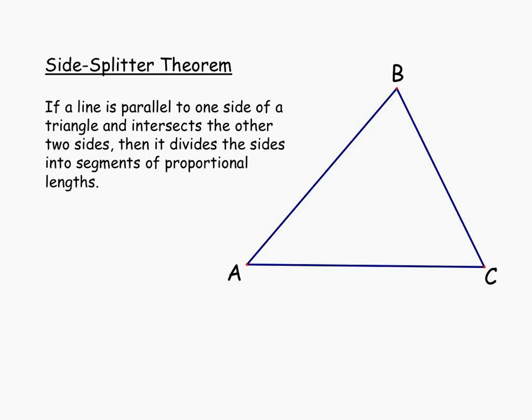In this lesson, we're going to work with what's known as the side-splitter theorem. Let's begin by reading the statement of the theorem: if a line is parallel to one side of a triangle and intersects the other two sides, then it divides those sides into segments of proportional lengths.